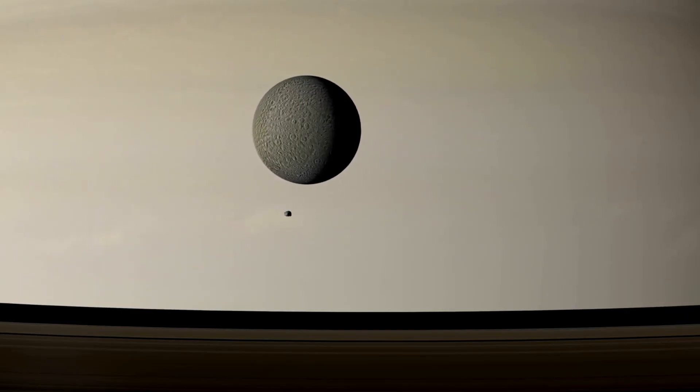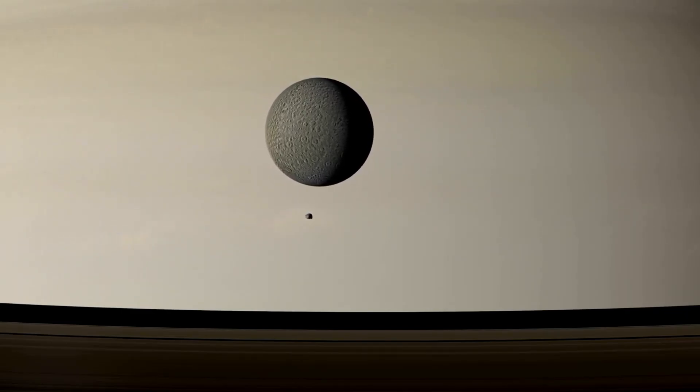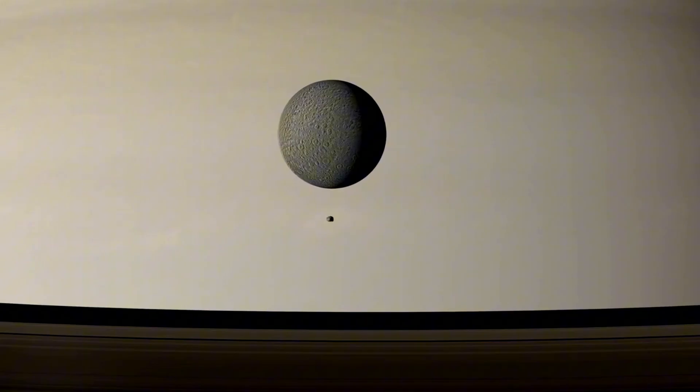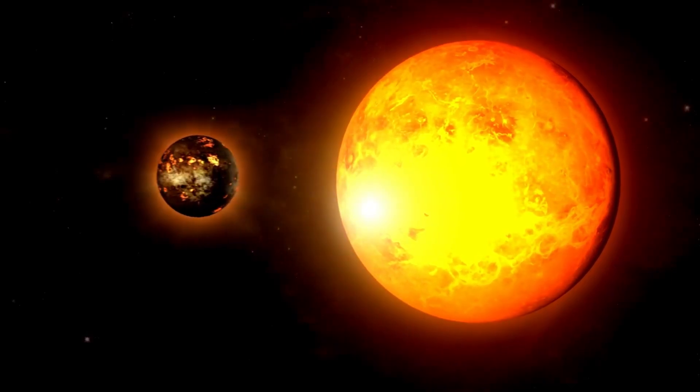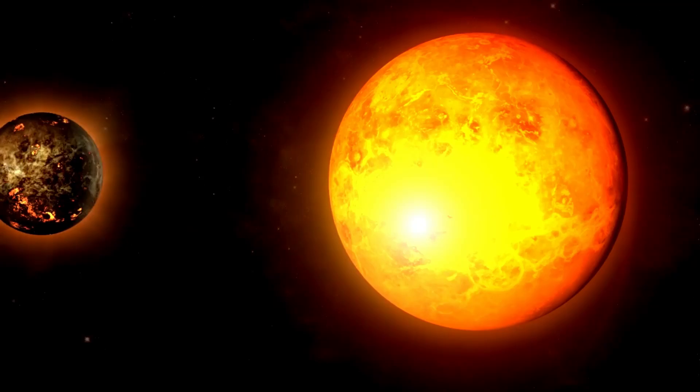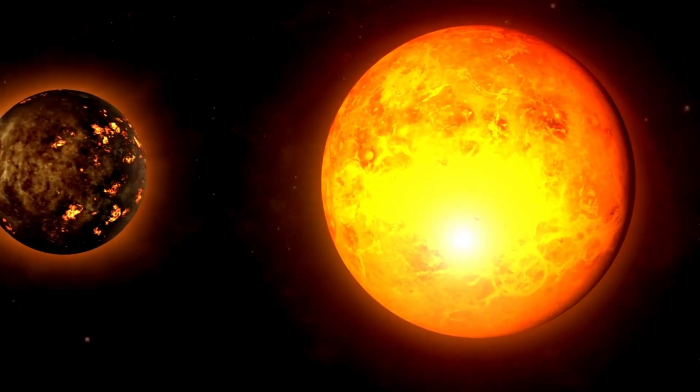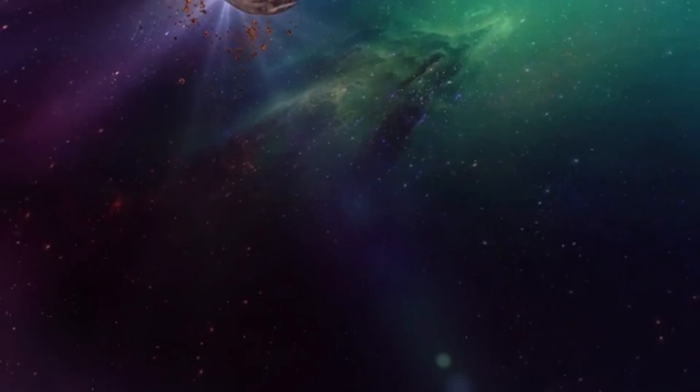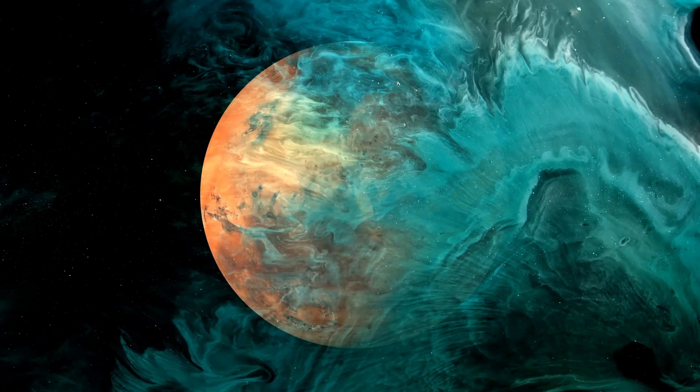The discovery of Proxima b was announced in 2016, raising the question of why this particular exoplanet has sparked so much interest. One of the main reasons is that Proxima b is the closest known exoplanet to our Sun, located at a distance of just 4.2 light years. While this distance is vast by our standards, it is relatively short on a cosmic scale.